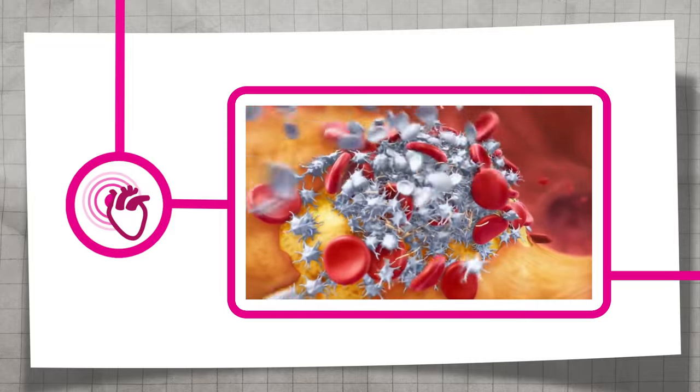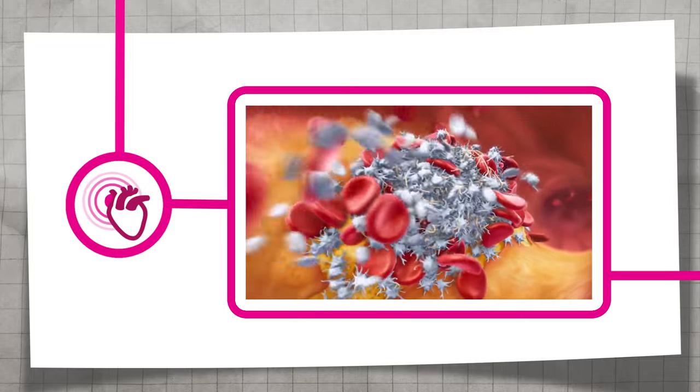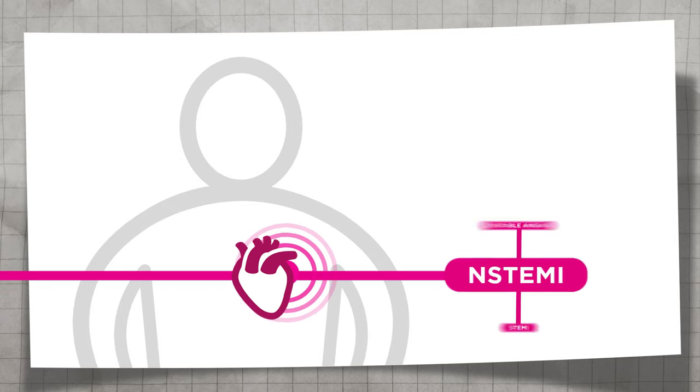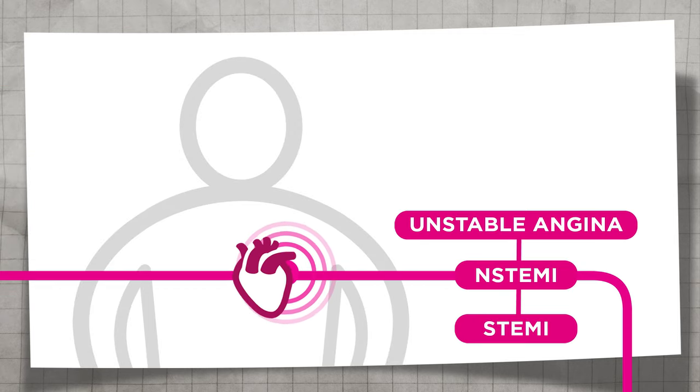If the clot partially or completely prevents blood flow to the heart, this can cause acute coronary syndrome, a collection of conditions comprising unstable angina, non-ST elevation myocardial infarction, and ST elevation myocardial infarction.